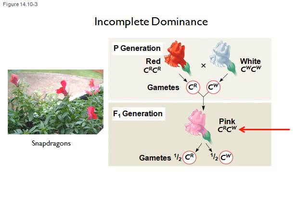Plants that produce red flowers are homozygous for the big R allele — big R, big R. White flowers are also homozygous — big W, big W. If you cross red-producing snapdragons with white flower-producing snapdragons, all of their offspring are pink and heterozygous. The offspring are not red and not white — they have an entirely different, intermediate phenotype. That pink heterozygous phenotype tells us this is incomplete dominance, because the big R allele does not completely dominate the white allele.